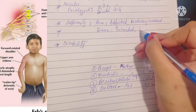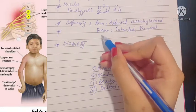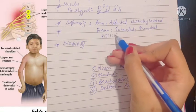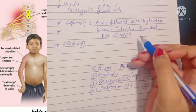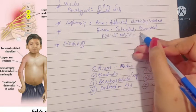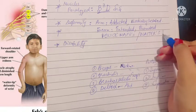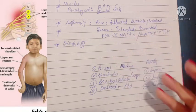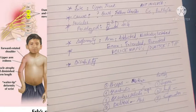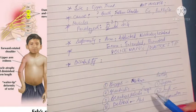Since all supinators are not working, the forearm will be pronated. This characteristic appearance is known as policeman's or waiter's tip. This is the classic deformity in Erb's paralysis.